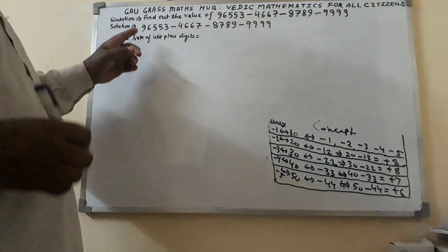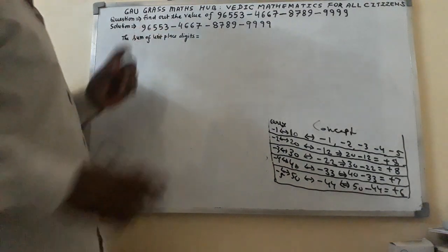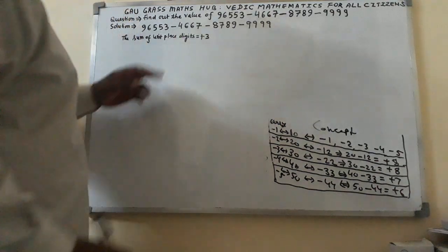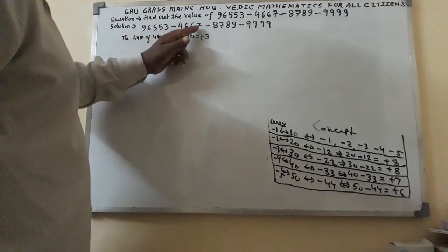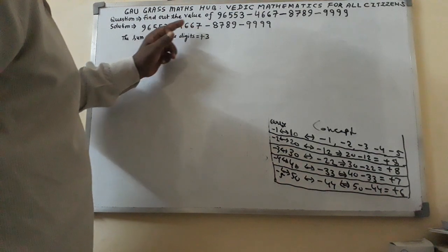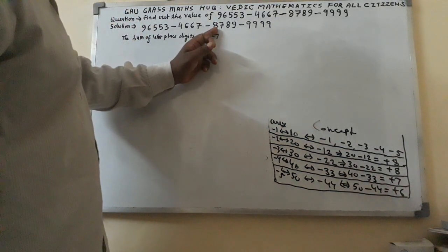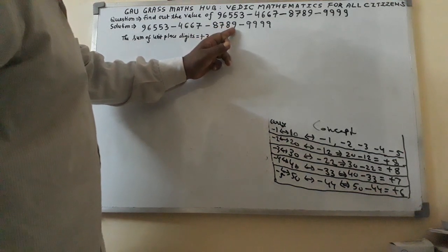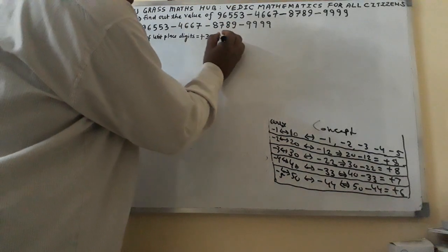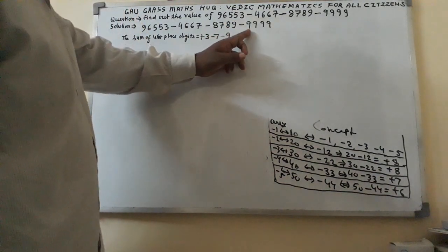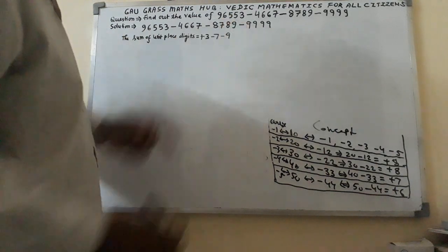Equal to: in the number 96,553, the unit place digit is 3, so here I shall write plus 3. In the number 4,657, the unit place digit is 7, so we shall write minus 7. In the number 8,789, the unit place digit is 9, we shall write minus 9. And in the number 9,999, the unit place digit is 9, we shall write minus 9.